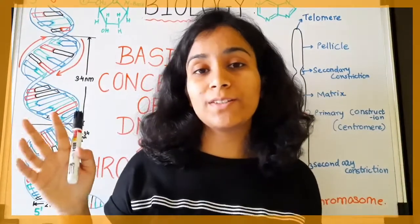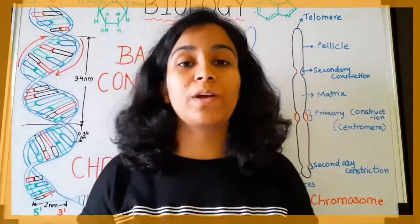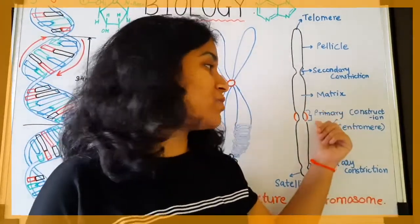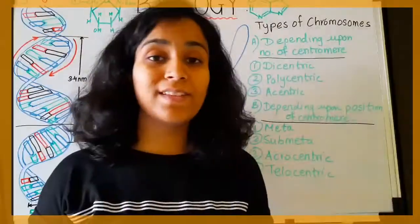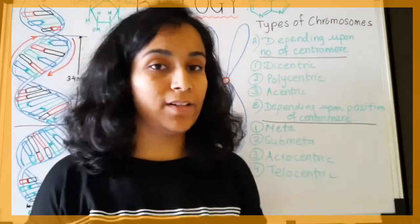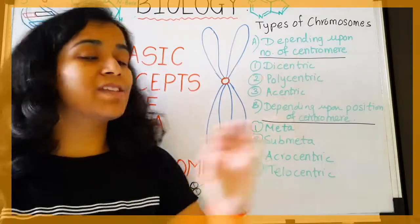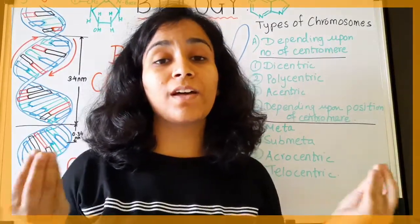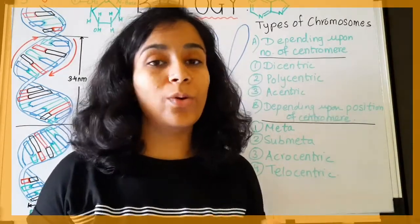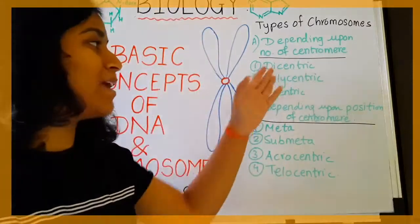The type of chromosome depends upon two factors: first, the number of centromeres present in a chromatid or chromosome, and second, the position of the centromere. Based on the number of centromeres, the first type is dicentric — chromatids in which two centromeres are present are known as dicentric.